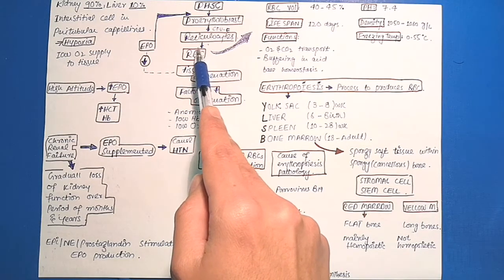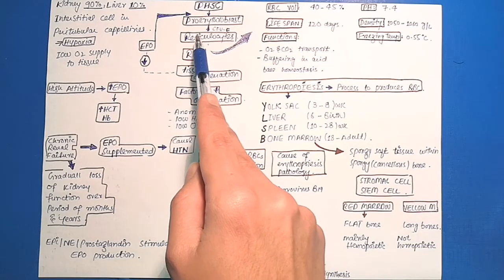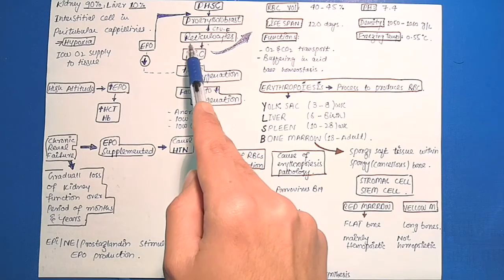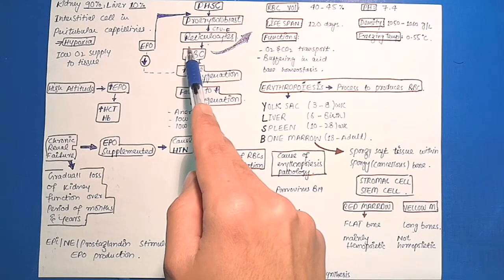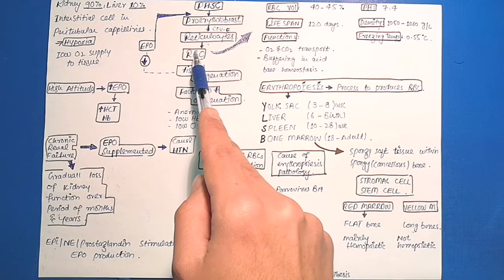The reticulocytes contain a small amount of basophilic material. So the reticulocytes leave the bone marrow and enter into the bloodstream by the process called diapedesis, which means they squeeze through the pores of the capillaries.